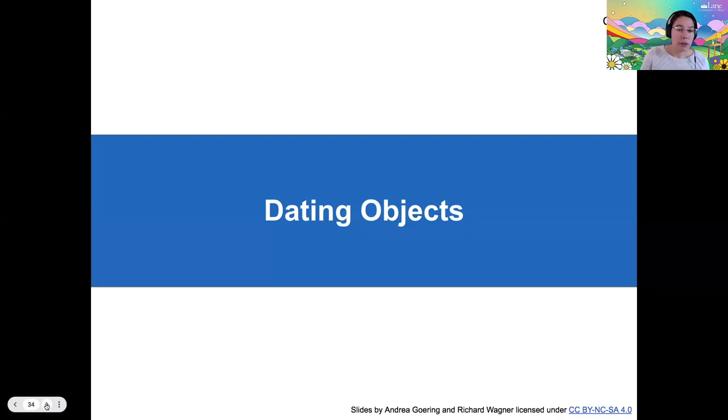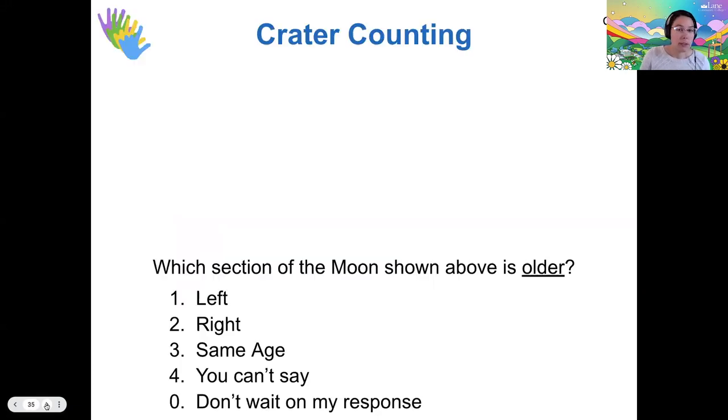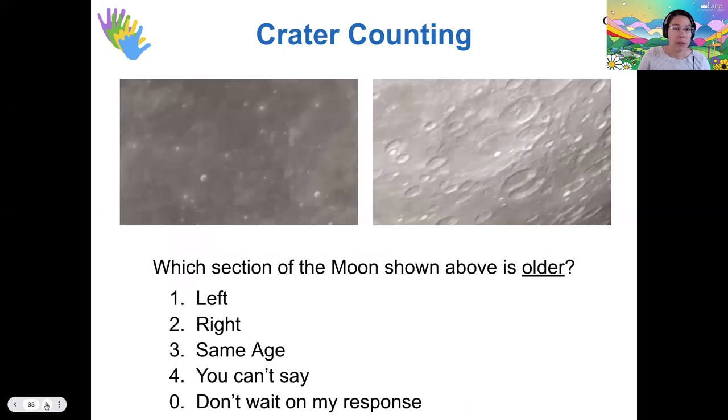I'm going to ask you a couple of things about dating objects. I think this is pretty clearly described in the book, but I just want to check on it. So let's talk about crater counting as one way to age surfaces. Based on your reading, which one of these sections of the moon looks older?